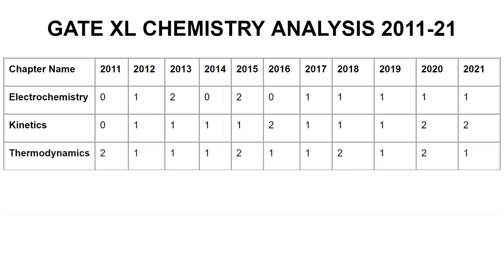Next unit is Thermodynamics — again very important, clearly evident from the year-wise distribution from 2011 to 2021. We have at least one question from the thermodynamics section every year. So again, a topic that you cannot skip.